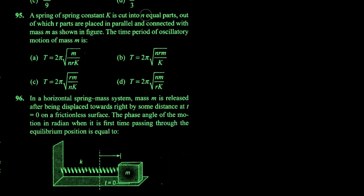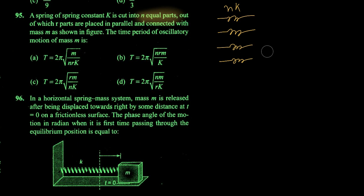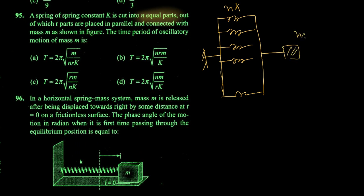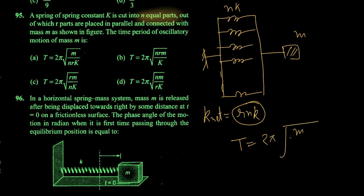A spring of constant k is cut into n equal parts; each part has spring constant nk. Of these, r parts are placed in parallel and connected with mass m. Connecting r parts in parallel gives k_net = r·nk. The time period is calculated accordingly. Your answer is option A.